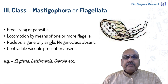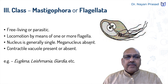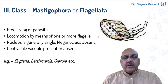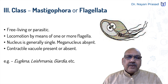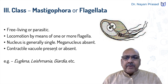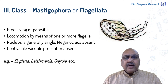Nucleus is generally single, but if more than one nuclei are present, all are similar — meaning meganucleus is absent in them. In Giardia, we see two nuclei of similar shape. Contractile vacuoles may be present or absent: present in free-living forms, absent in parasitic forms. Common examples of this group are Euglena, Leishmania, and Giardia — all with flagella as locomotory structures.